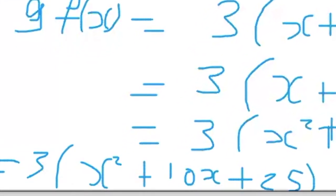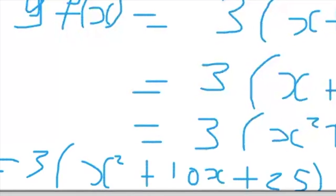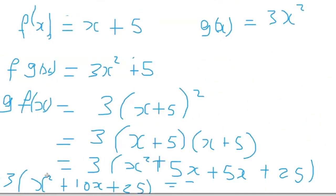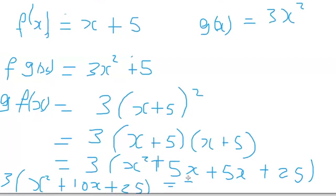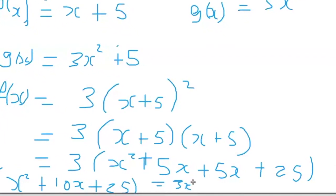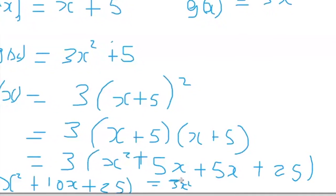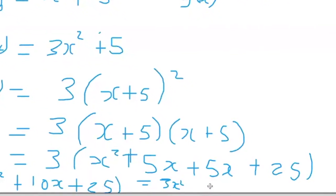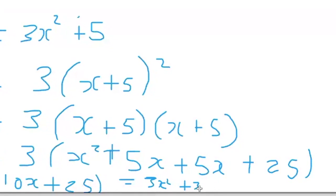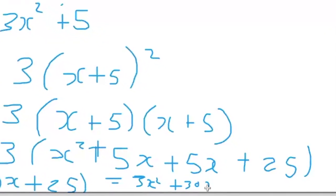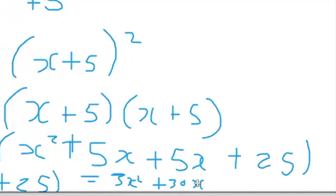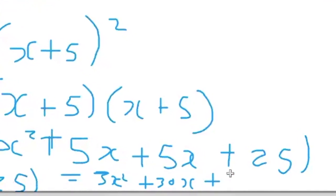Now multiplying all of these by 3: 3 times x squared gives us 3x squared, 3 times 10x gives us 30x, and 3 times 25 is 75. And there you go.